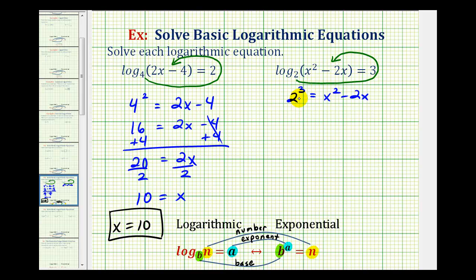Well, two to the third is equal to two times two times two, which is eight. Here we have a quadratic equation. So we'll set it equal to zero and see if it factors. So we'll subtract eight on both sides. So we have zero equals x squared minus 2x minus 8.